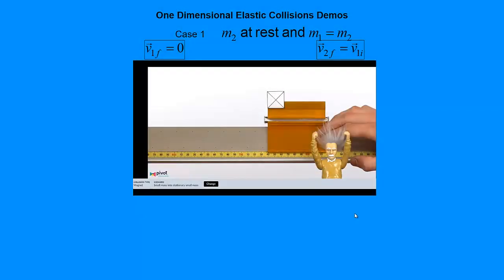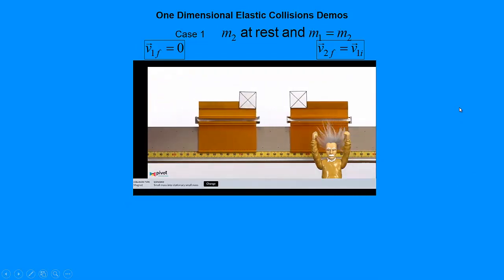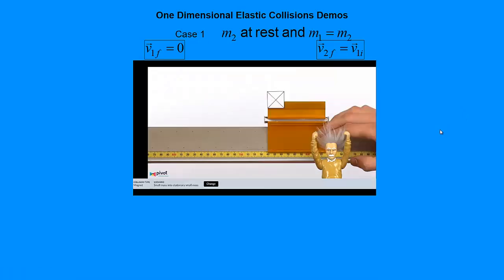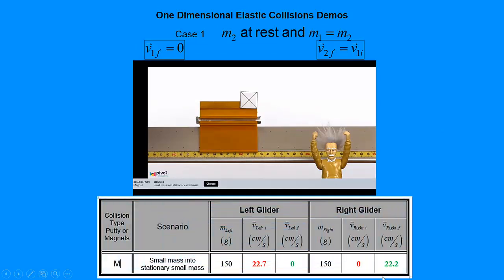Let's take a look at the video. If you look down here, you'll notice that we have small mass into stationary small mass. Exactly what we talked about. Let's watch what happens. Watch it again. See the first one stop, and the second one basically go off with the same velocity. And, if you're worried if your eyes deceive you, well, we actually analyzed this. This was my data. Take a look at yours. Find this one. Find this scenario. Small mass into stationary small mass.